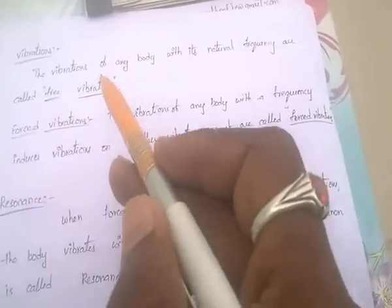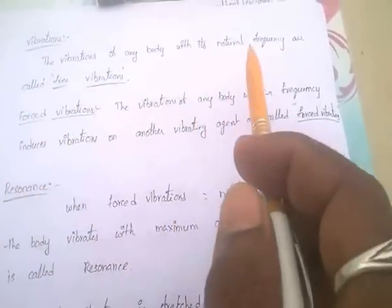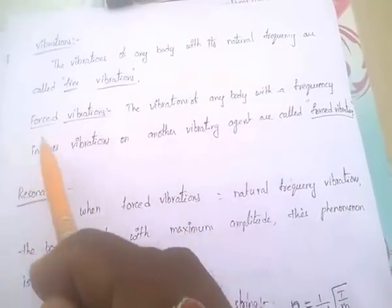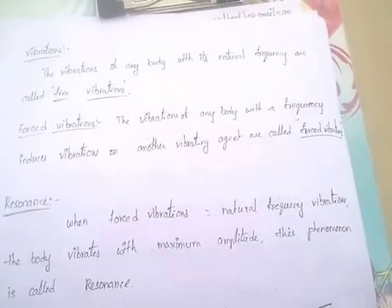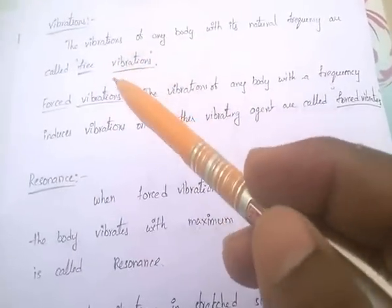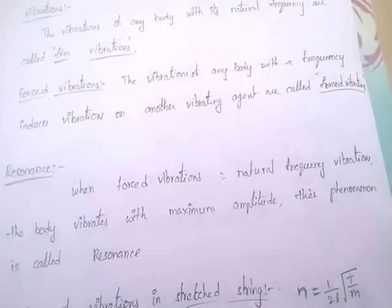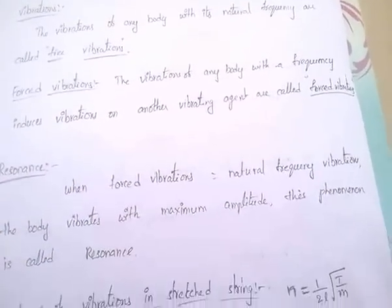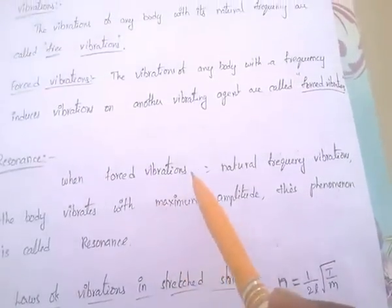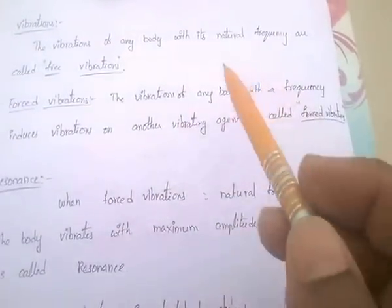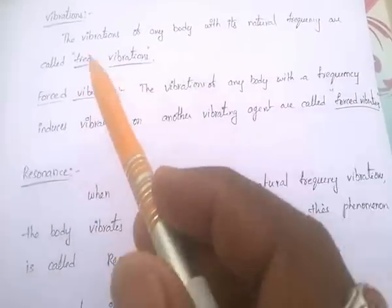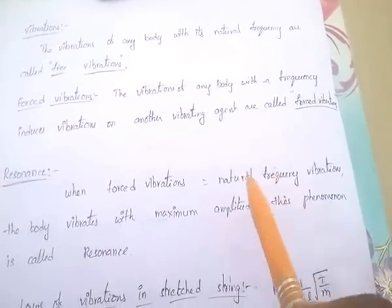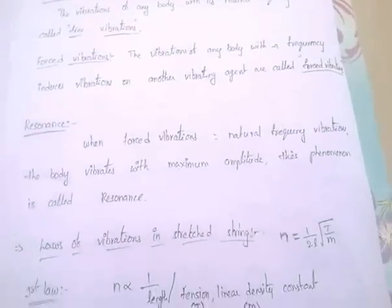Resonance occurs when the forced vibrations are equal to the natural frequency of vibration — that is, when forced vibrations equal free vibrations — and the body vibrates with maximum amplitude. This phenomenon is known as resonance.